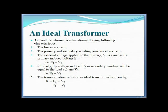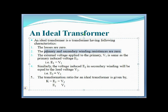Next point: ideal transformer. An ideal transformer is one in which losses are zero, primary and secondary winding resistance is zero. The external voltage V1 and primary induced voltage E1 are the same, so E1 = V1. Similarly, for the secondary winding, E2 = V2.